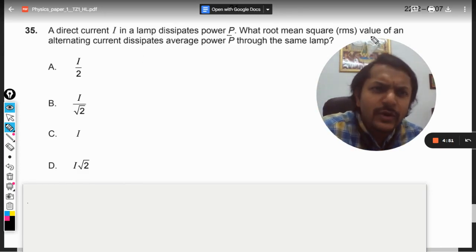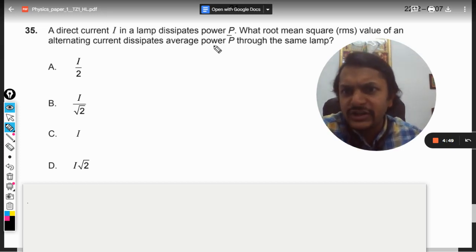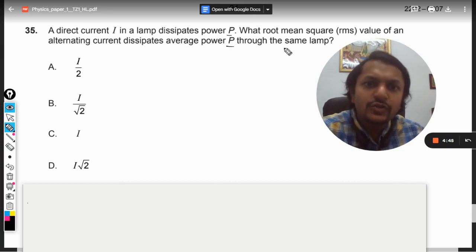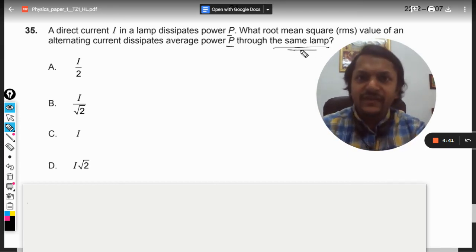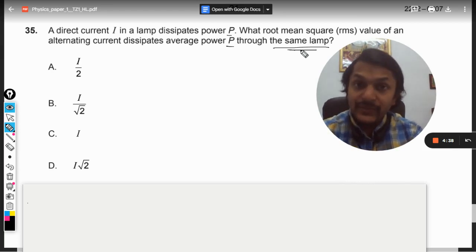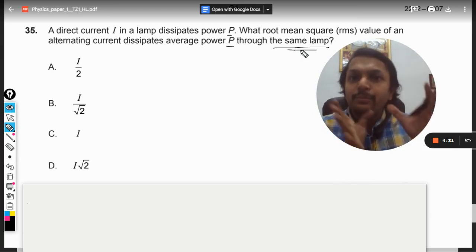What root mean square value of an alternating current dissipates the average power P through the same lamp? So what we want is that what should be the value of the root mean square value of some alternating current that would be giving us the same power.